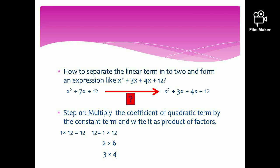Our problem is how to separate x squared plus 7x plus 12 into the form x squared plus 3x plus 4x plus 12. Follow these steps. Step 1: multiply the coefficient of the quadratic term by the constant term and write it as a product of factors. Here the coefficient of the quadratic term is 1 and the constant term is 12, so 1 times 12 equals 12. Write 12 as products of its factors: 1 times 12, 2 times 6, 3 times 4, etc. The sequence of writing the factors is not important.